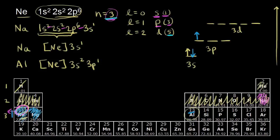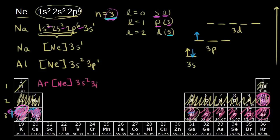Let's jump all the way over to argon and write its electron configuration using noble gas notation. The noble gas before argon is neon. So we put neon in brackets, then we have 3s1, 3s2 — so we have 3s2. Going over through the p orbitals: 3p1, 3p2, 3p3, 3p4, 3p5, and 3p6. So we write 3s2, 3p6 for argon. If we put in those electrons following Hund's rule, as discussed in the last video, we can see that we've filled the 3p orbitals. That's argon.